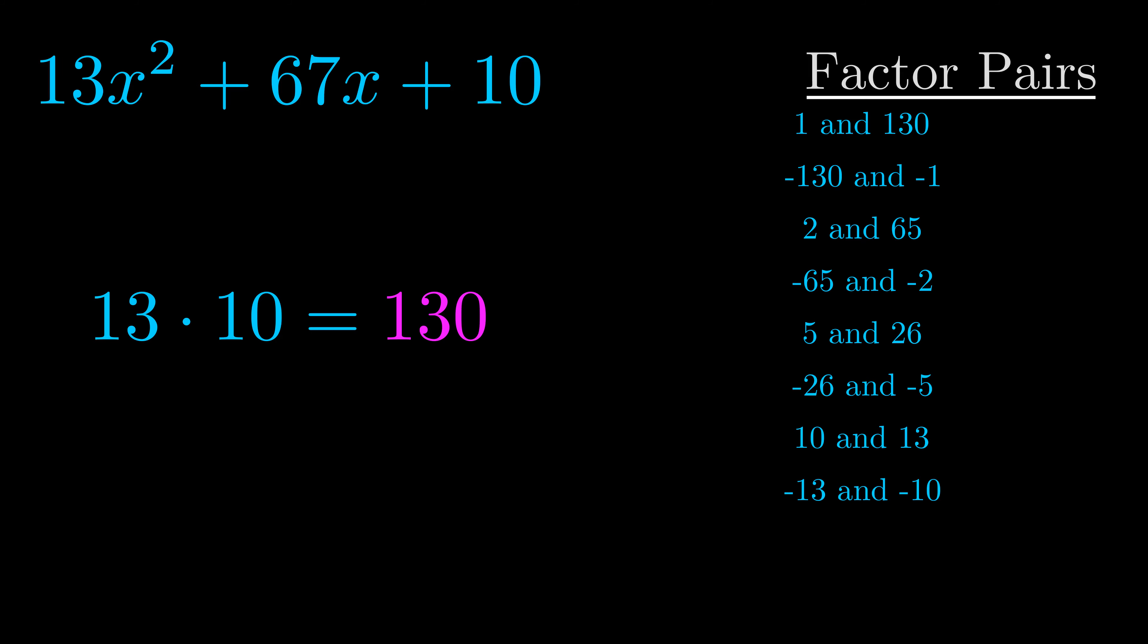The b value is the coefficient on the x term. That's the middle term, the one that we haven't done anything with yet. And really this is the only factor pair that we need.